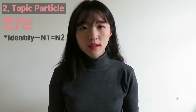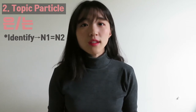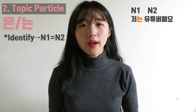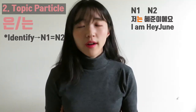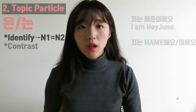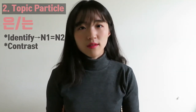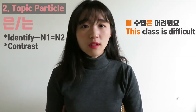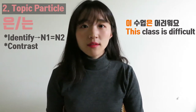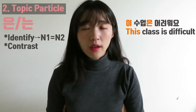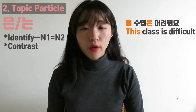은/는 also has four different functions. The first one is identifying — noun 1 equals noun 2. For example, 저는 유튜버예요 — I am a YouTuber. Or 저는 혜준이에요 — I am Hyejun. The second function is contrast, which is the most important function of 은/는. For example, 이 수업은 어려워요 — this class is difficult — implying your other classes are not as difficult, but this particular class is.